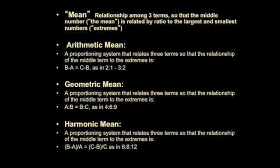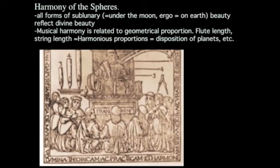The most complex method of proportioning embraced by Renaissance theory is the harmonic mean — probably the most potent, because it gives the truest ability to mirror the harmony of the spheres, the divine order that organizes the cosmos, music, and beauty. It relates three terms so that the quantity B minus A over A equals the quantity C minus B over C — as in six to eight to twelve. This reinforces the notion that proportion is not simply there to make things look good, but that proportion is revelatory of divine order.